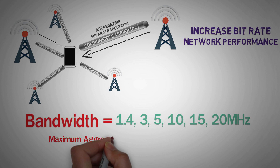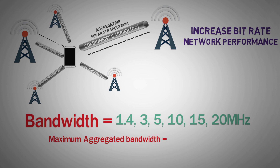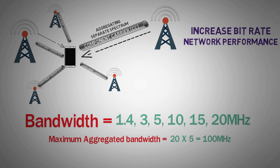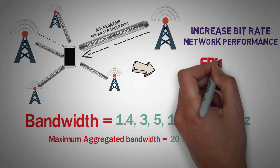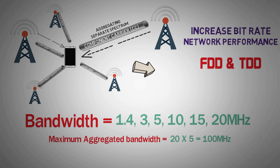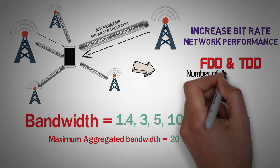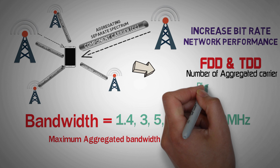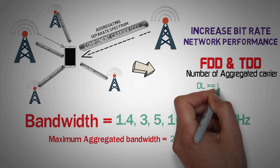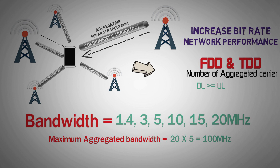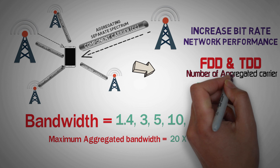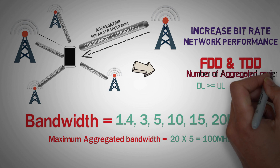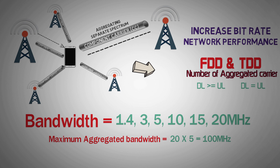Hence, the maximum aggregated bandwidth is 20 times 5, that is 100 MHz. Carrier aggregation can be used for both FDD and TDD. In FDD, the number of aggregated carriers in downlink is always greater than or equal to the number of carriers in uplink, while in TDD the numbers will normally be the same for both downlink and uplink.